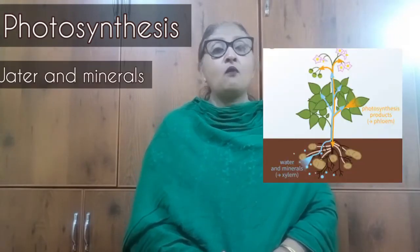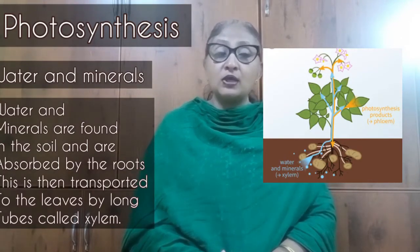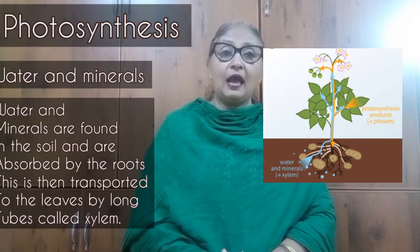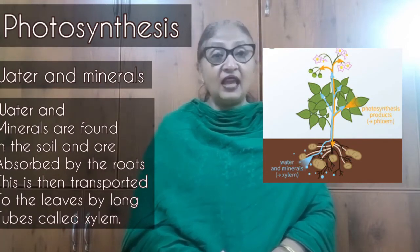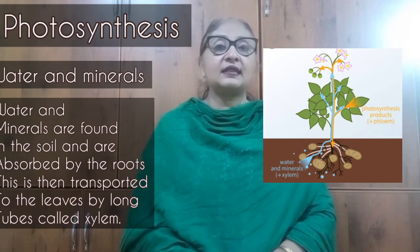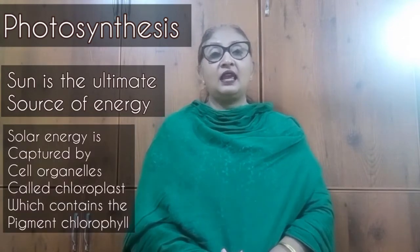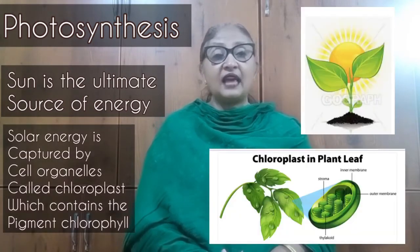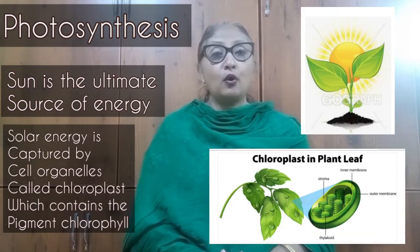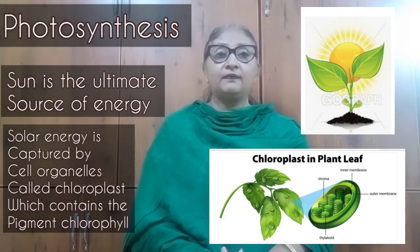Next, water and minerals. Water and minerals are found in the soil. Roots that are present in the soil absorb the water and minerals and take them to the leaves through long tubes known as xylem. The sun is the ultimate source of energy. This solar energy is captured by the cell organelle known as chloroplast, which contains the green coloring pigment chlorophyll.